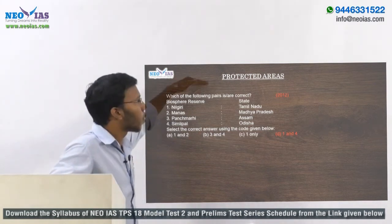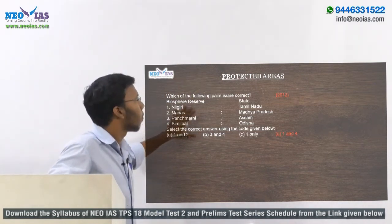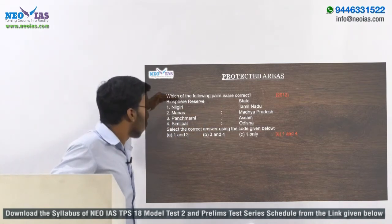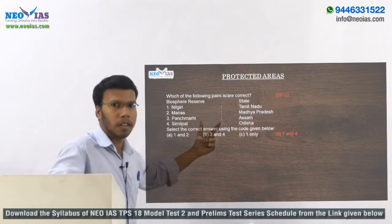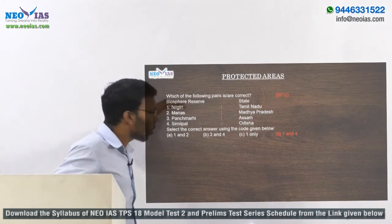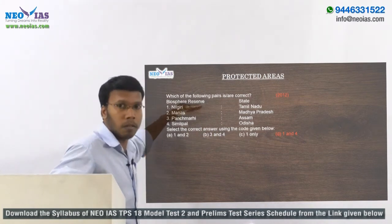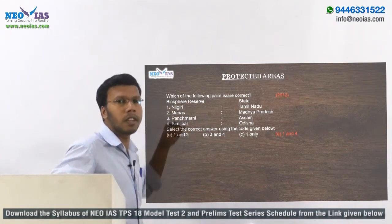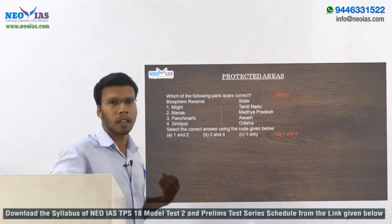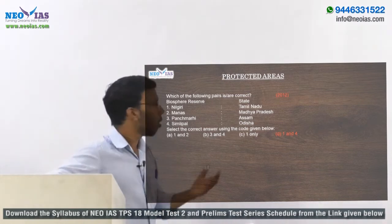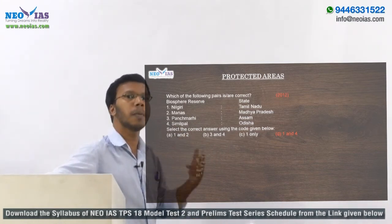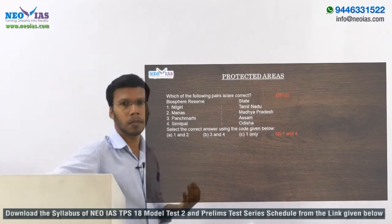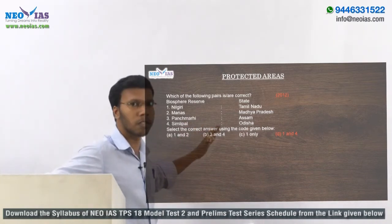Another important area is protected areas. One common pattern is where they give a list of protected areas like Biosphere Reserves with their states and ask you to match them correctly. Instead of Biosphere Reserves, they may give Tiger Reserves, National Parks, or Wildlife Sanctuaries. We need to know the important protected areas in India — those previously asked by UPSC, those recently in the news, or those having special features.